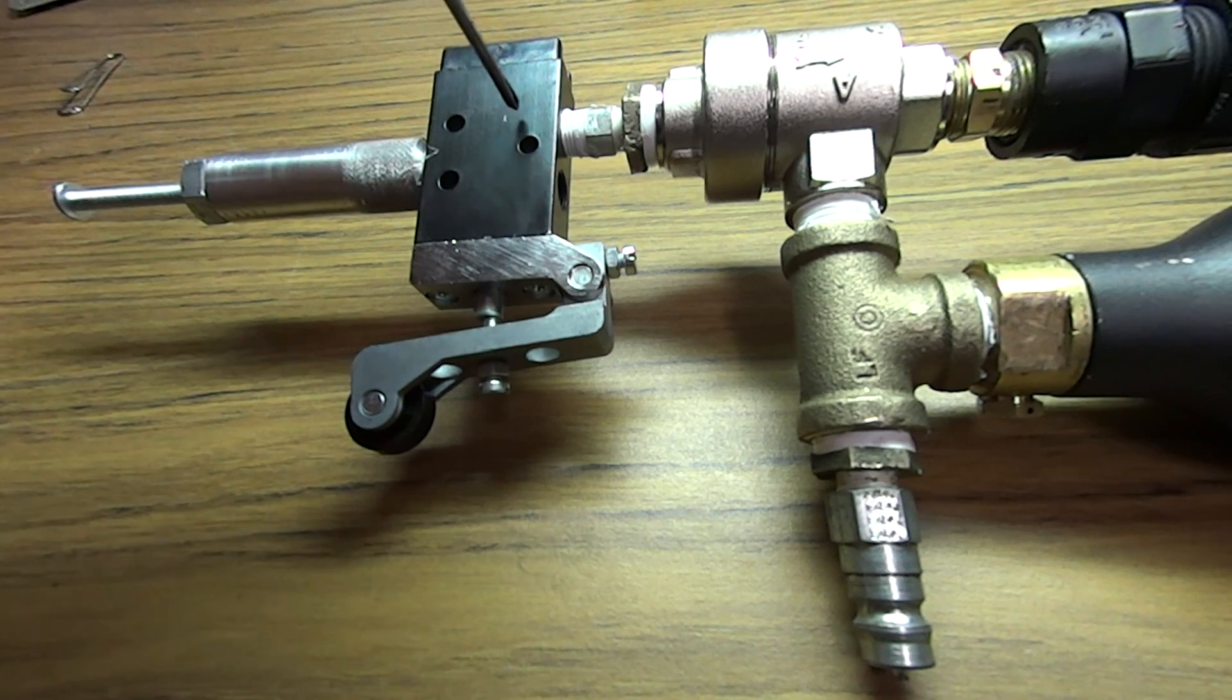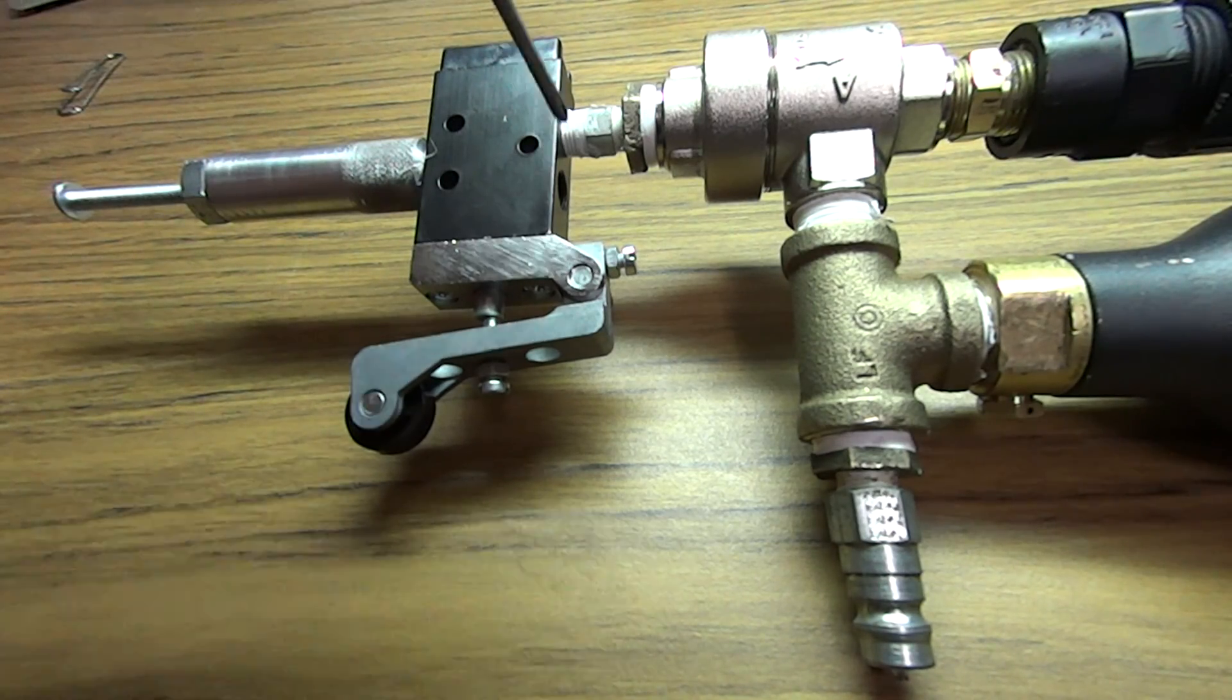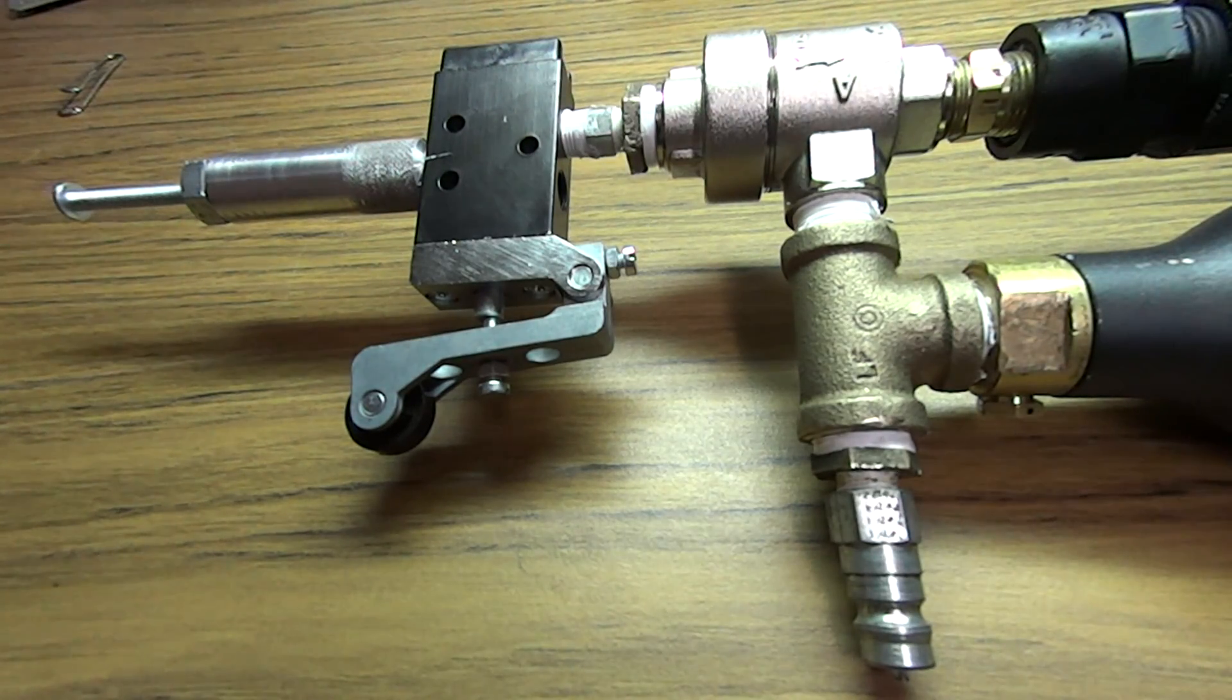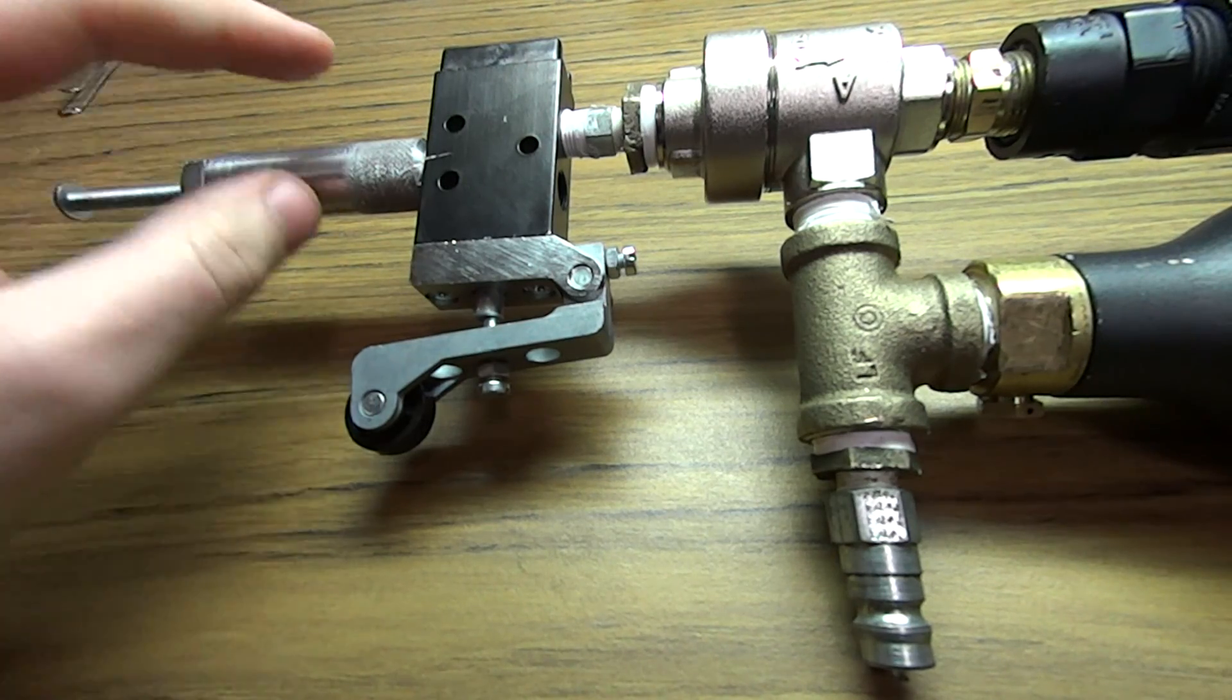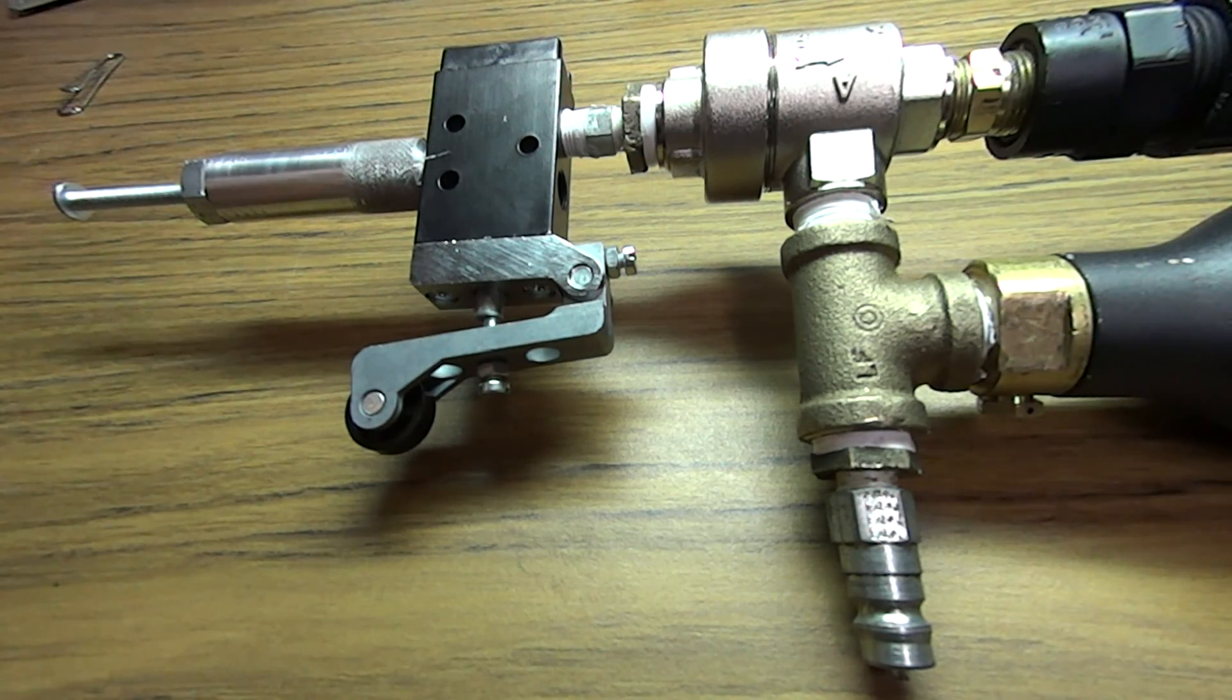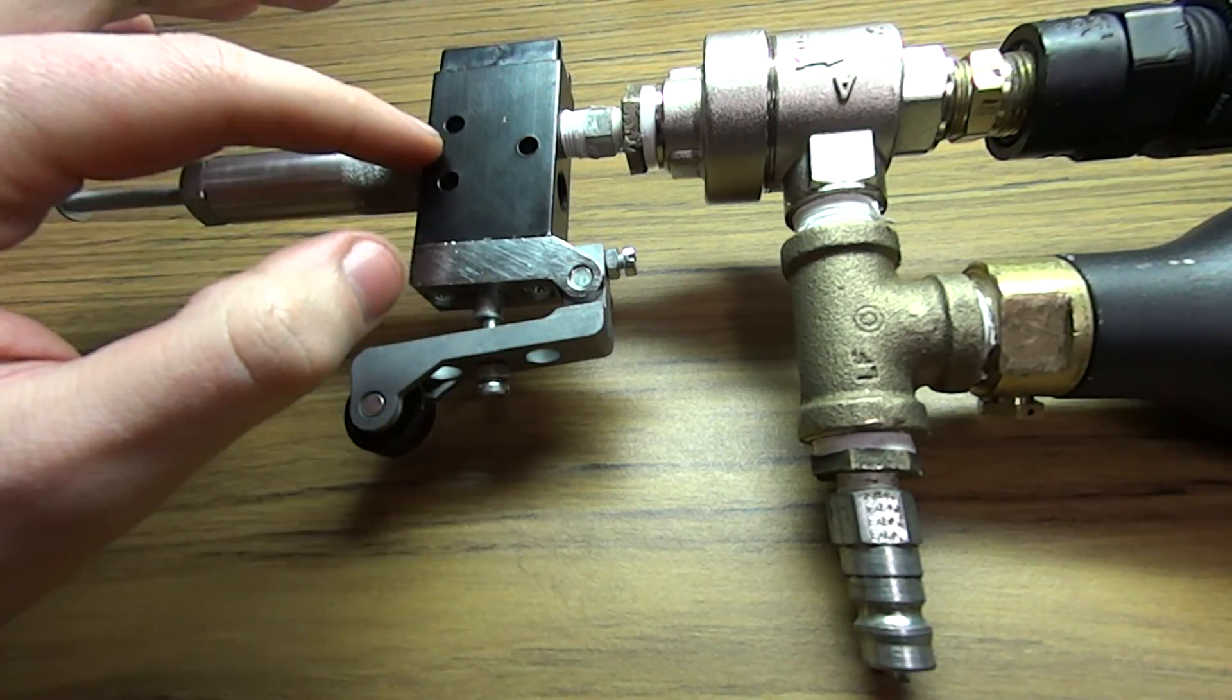...then it closes this opening and opens up this opening from here down to here. So right now these two are open and this one is closed. So anyway, if this opening back here was just left open, it would just be a single shotgun. You would push the valve and it would just dump all the air out straight into here.